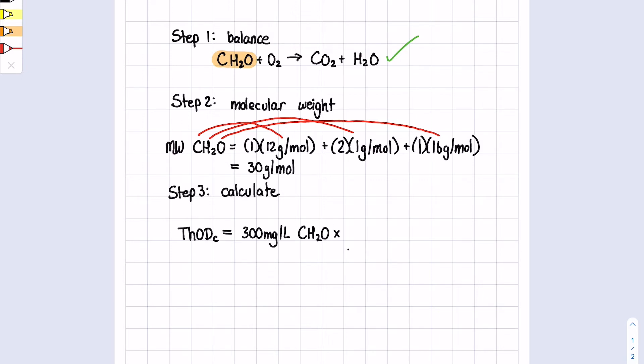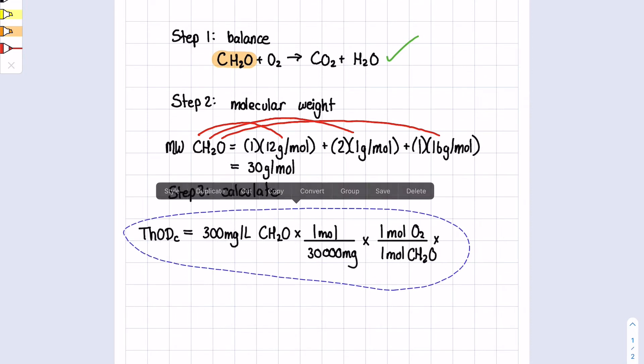So we're able to use that ratio: one mole per 30,000 milligrams of CH2O. Then we can use our chemical formula to see the molar ratio of one mole of O2 (because we're always trying to get to oxygen) equals one mole of CH2O. Then to get back to milligrams per liter, we multiply by the molar weight of oxygen.